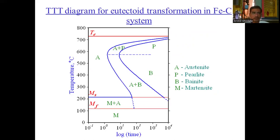This is the TTT diagram for eutectoid transformation in the Fe-Fe3C system. On the x-axis is time, and on the y-axis is temperature from 0 to 800°C. A is the austenite phase, P is the pearlite phase, B is the bainite phase, and M is the martensite phase. When cooling starts from the transformation temperature, austenite converts into upper pearlite (coarse pearlite) and fine pearlite, then into upper bainite and lower bainite, and with fast cooling, into martensite. The martensite start temperature and martensite finish temperature lines show the conversion of austenite into martensite with increasing martensite percentage and reducing austenite percentage.